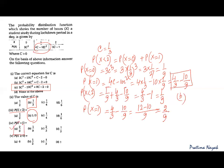You should also learn this: P(X ≥ 0). Greater than or equal to 0 means it covers all values from 0 onwards, which covers all terms. The sum of all probabilities is always 1, so P(X ≥ 0) = 1. No calculation needed.